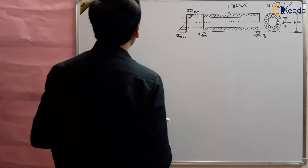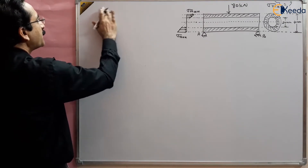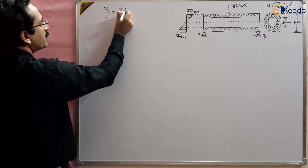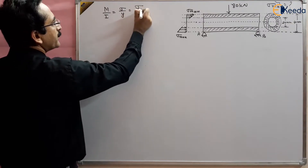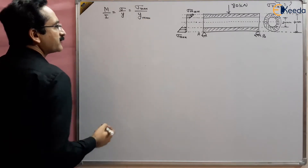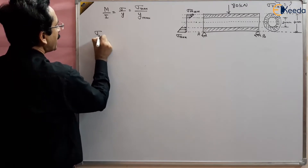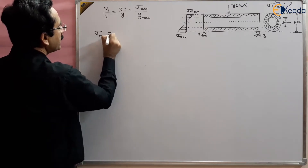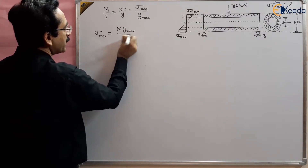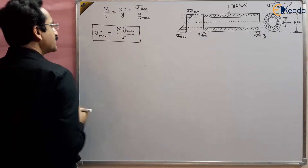We know the formula for maximum bending stress — the bending formula. What is the bending formula? M/I = σ/y. Sigma is maximum when y is maximum, and y_max is at the outer fiber. So from here we can find out sigma_max, which is given as M × y_max / I.